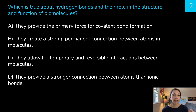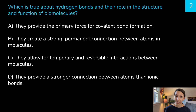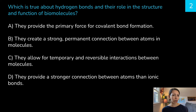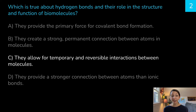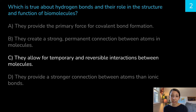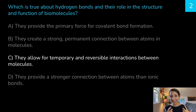What is true about hydrogen bonds and their role in the structure and function of biomolecules? A: they provide the primary force for covalent bond formation. B: they create a strong permanent connection between atoms and molecules. C: they allow for temporary and reversible interactions between molecules. D: they provide a stronger connection than ionic bonds. The correct answer is C — they allow for temporary and reversible interactions. DNA, for example, has to unzip in order to replicate or undergo protein synthesis, and those hydrogen bonds, which can come apart and then back together again, are really useful to be at the center of that molecule.